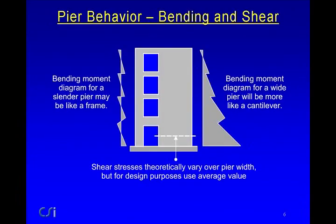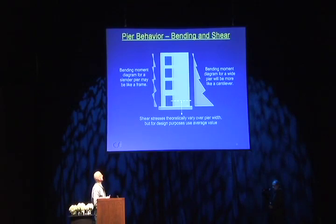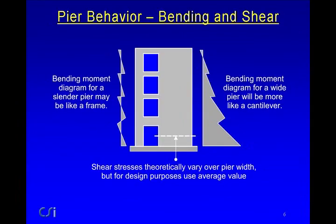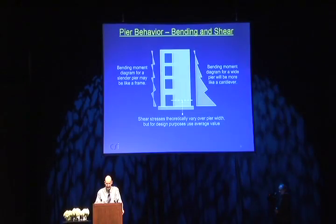Looking at pier behavior: on the left we have a pretty slender pier with fairly substantial coupling beams, and the bending moment diagram for that pier might be pretty much what it would be for a column in a frame. Notice the moment varies over the depth of the beam. For the wide pier, the shape of the moment diagram is more likely to be like that for a cantilever. Theoretically, shear stresses could vary substantially over the width of the pier, but for design you use the complete width and design based on average shear stress.